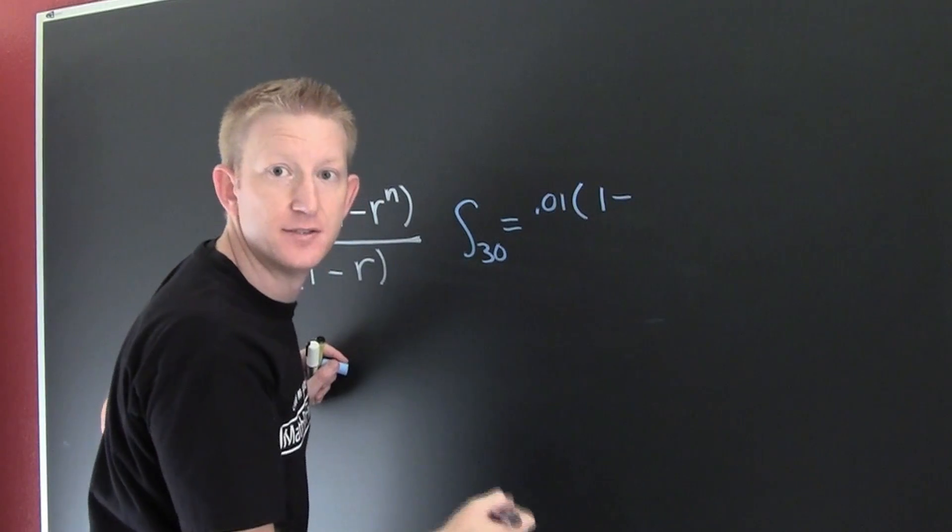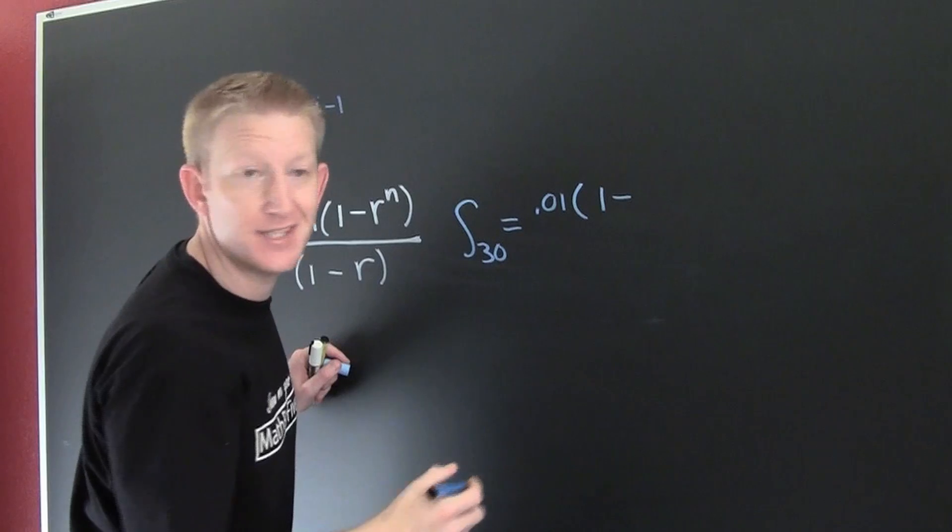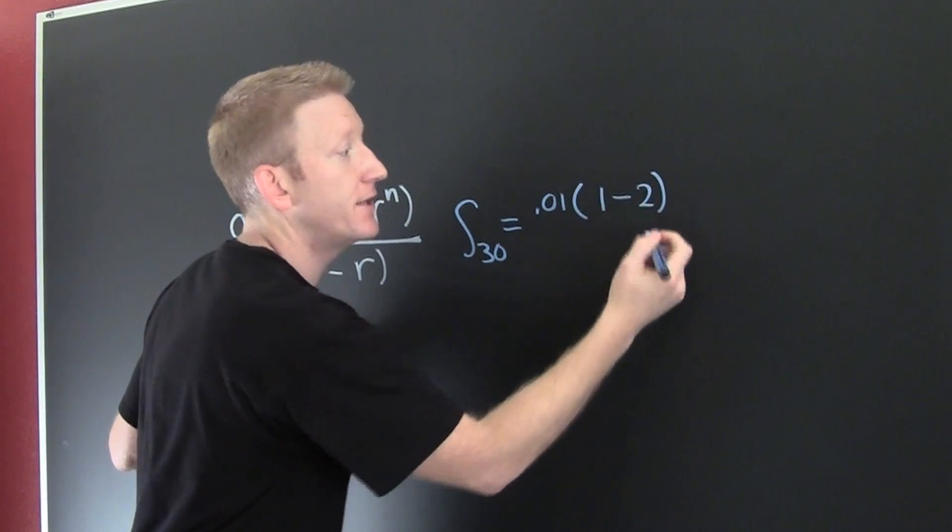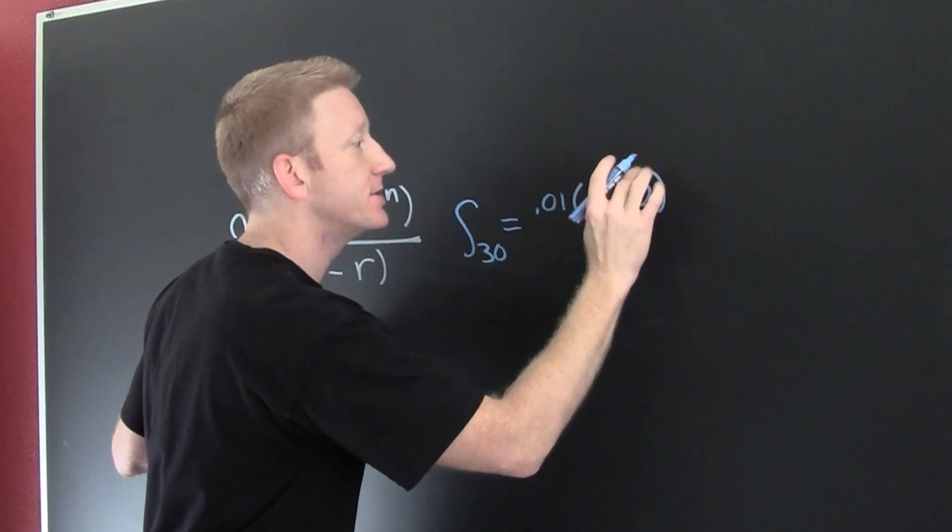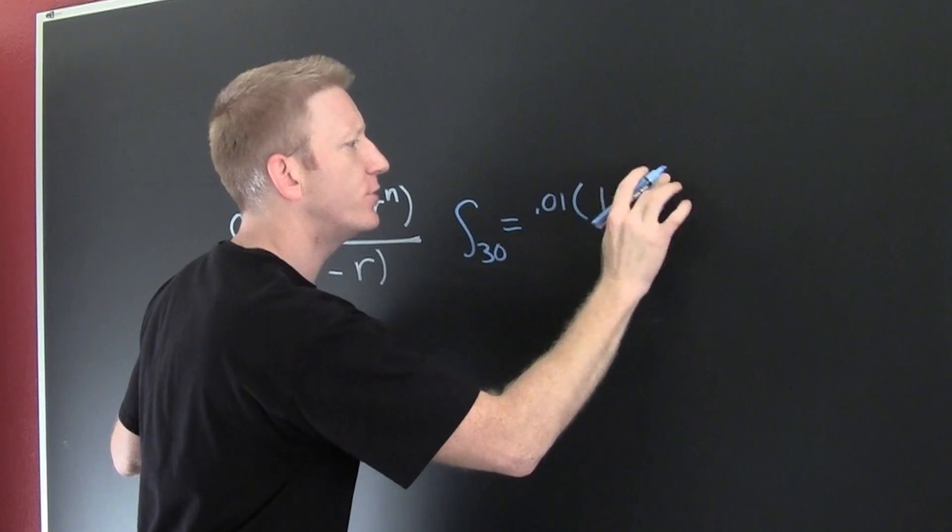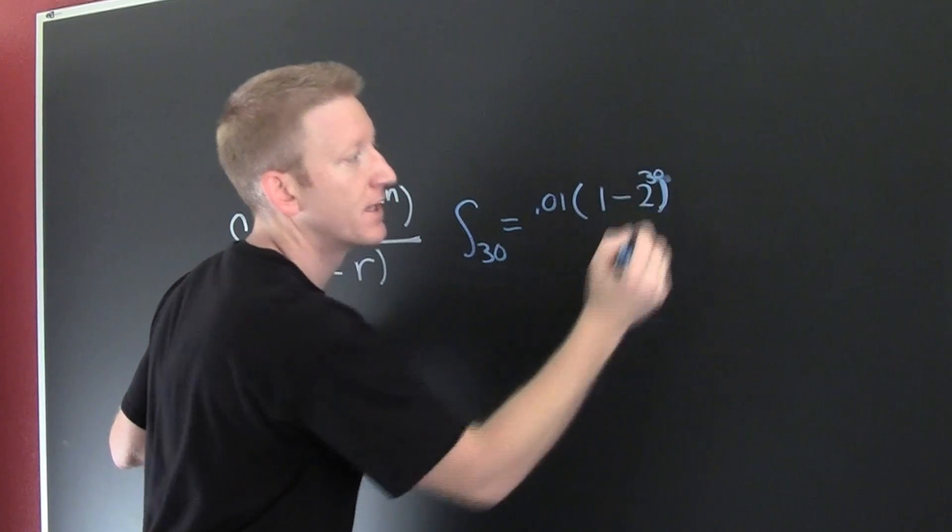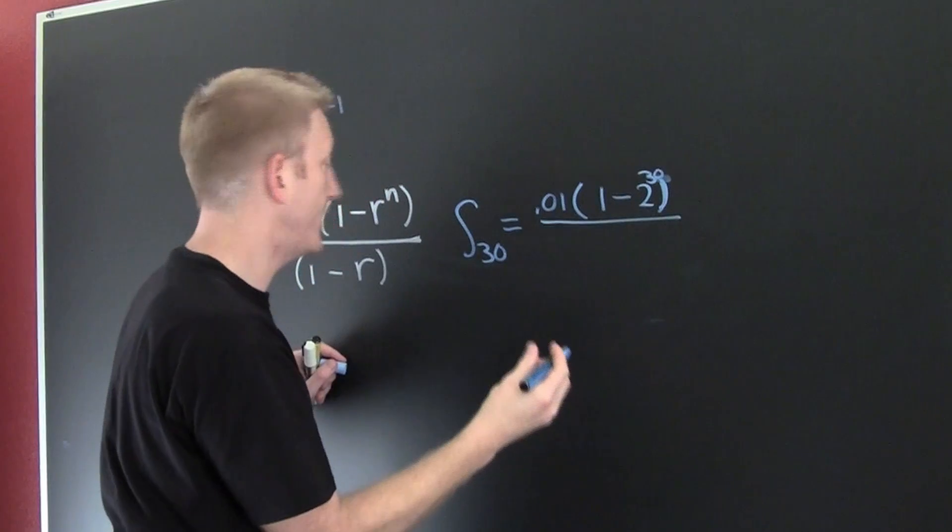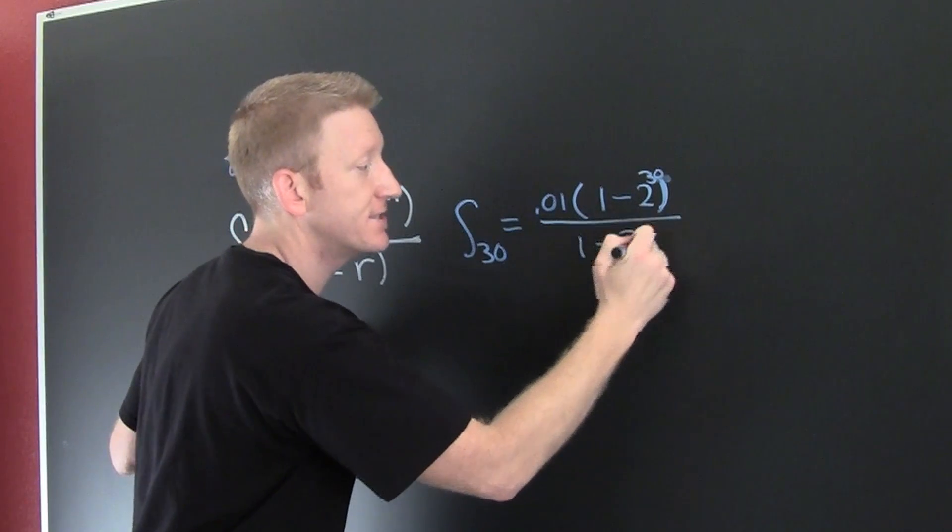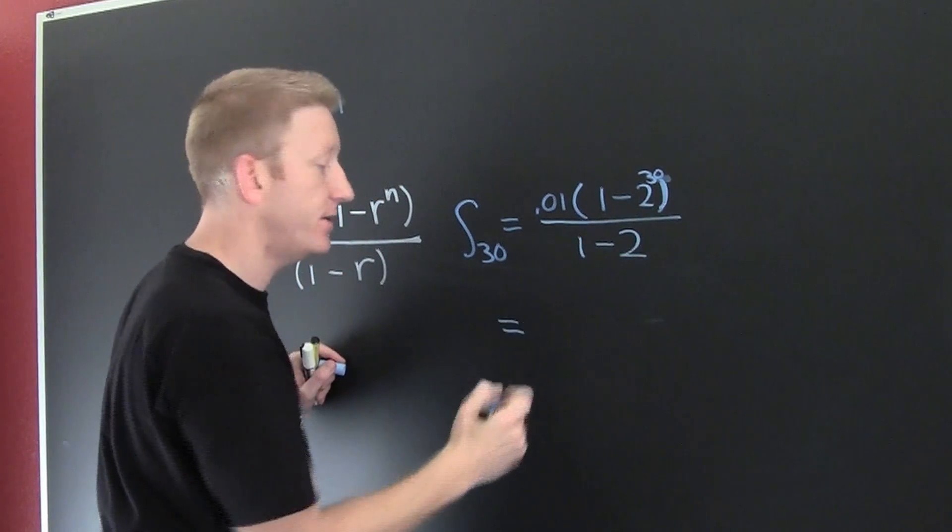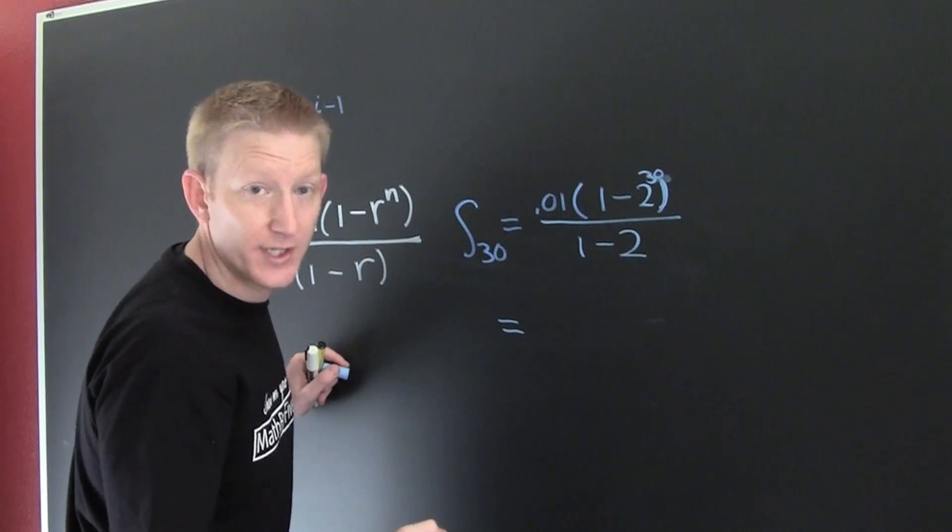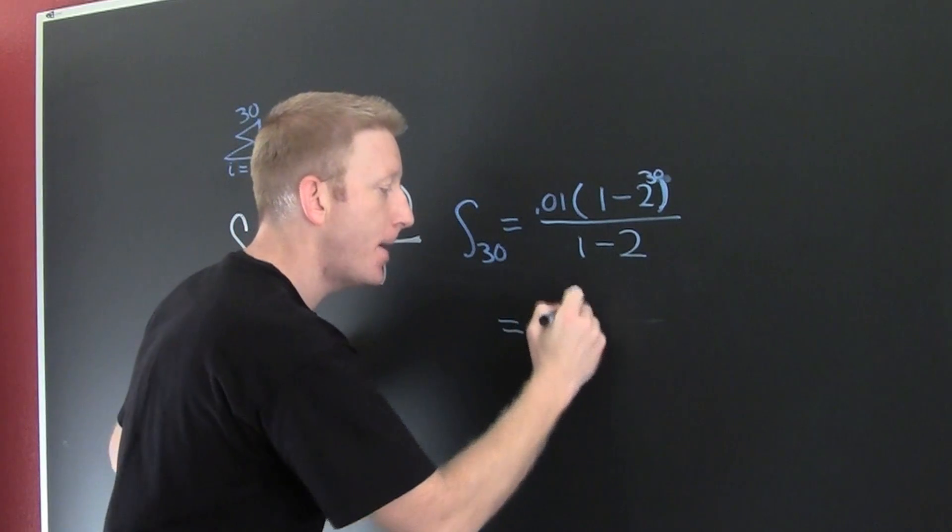And then this is gonna be one minus what was our base? Two, because it doubled every day. Two to the... wait for it... thirty, divided by one minus two. And then when we pound all that out, we're gonna get ten million, seven hundred thirty-seven thousand, four hundred eighteen point two three.